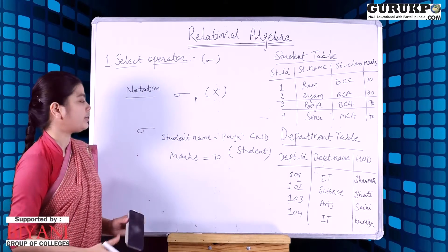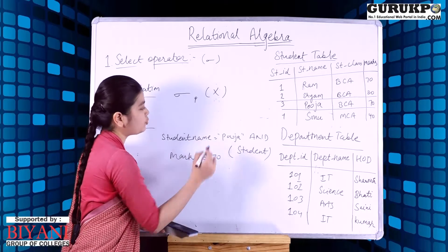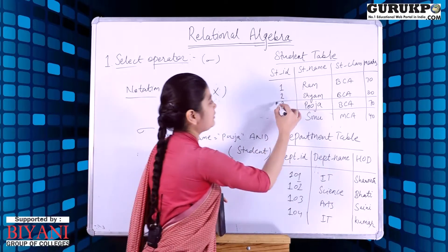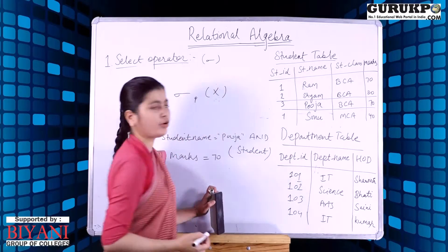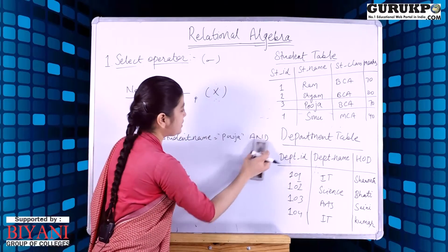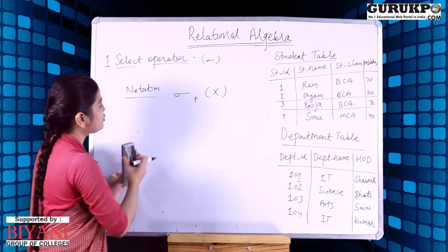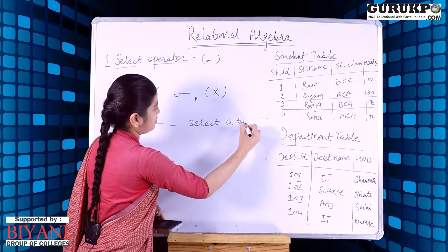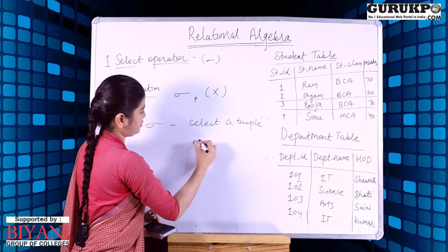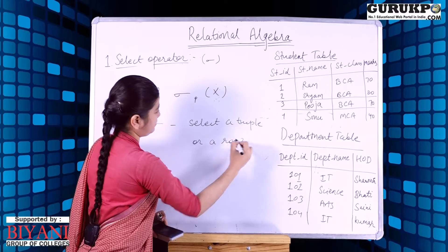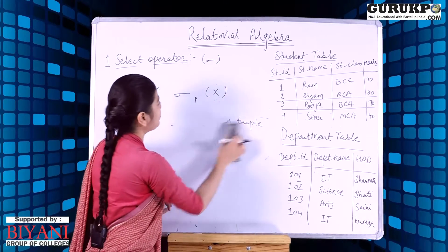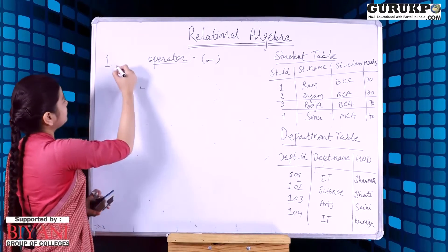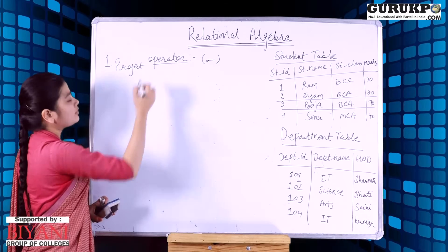Let's take another example where we give two conditions: first, the student name is equal to 'Puja', and second, the marks are equal to 70. This again gives us the third row from the student table. So basically, the select operator is used to select a tuple or a row.